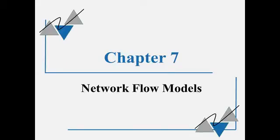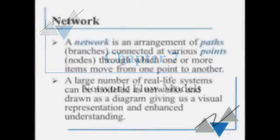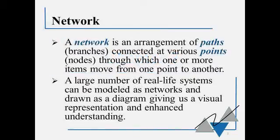In Chapter 7, we are going to talk about three different kinds of network flow models. A network is an arrangement of paths connected at various points, and we're trying to move something from one point to another. There are a lot of real-life problems that we can model as networks, and we can draw a diagram. This will not only help us understand what's going on, but it helps us solve the problem that we have in trying to move things.